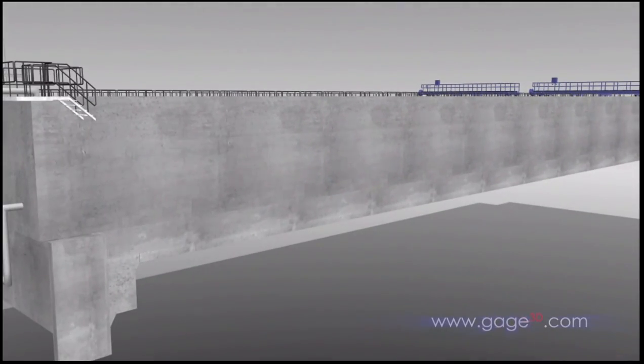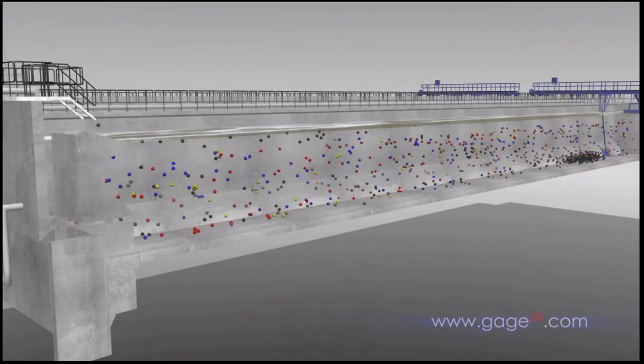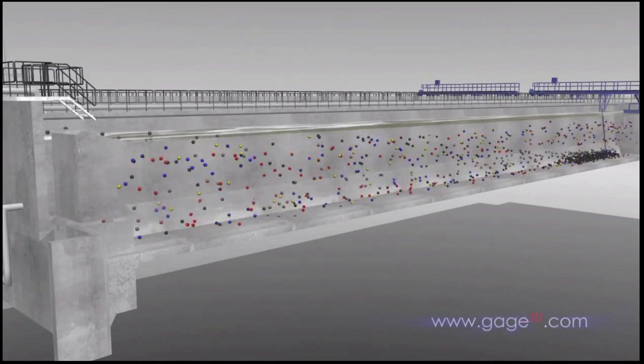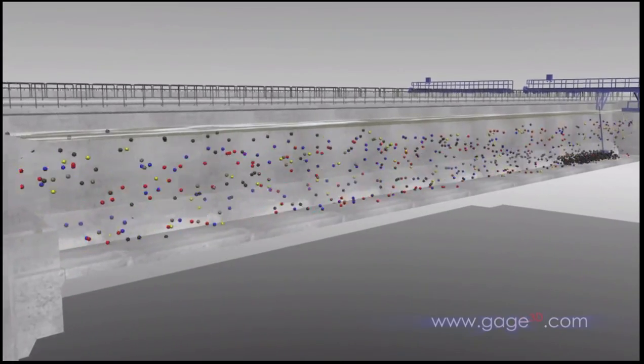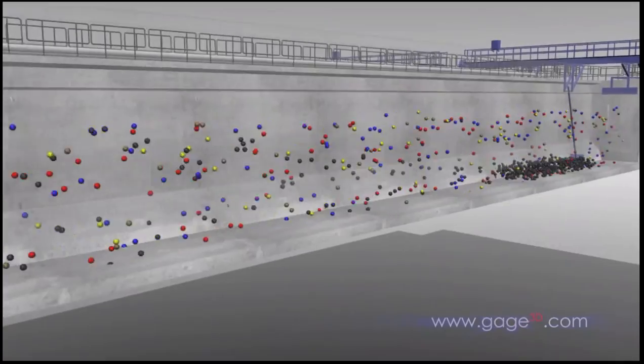The next stop within the headworks is the grit removal chamber. Grit is made up of large, heavy particles like sand or eroded cement. Water flows slowly through this tank, keeping organic matter like food, waste, bacteria, or excrement in suspension, but giving the heavier grit a chance to fall to the bottom.